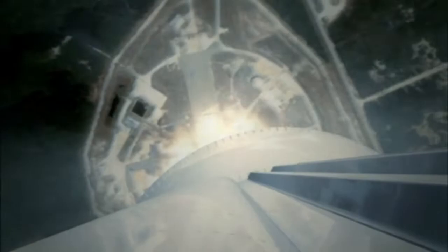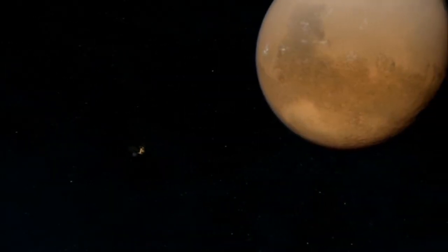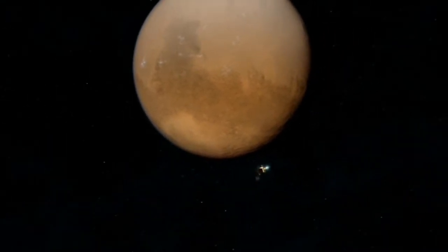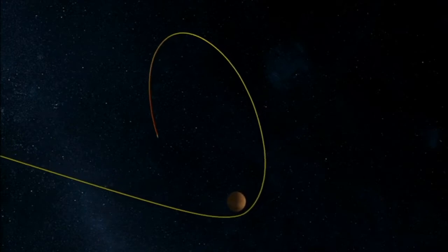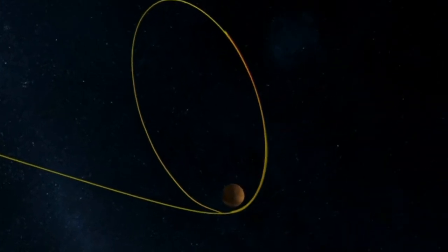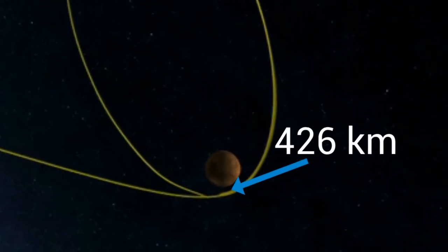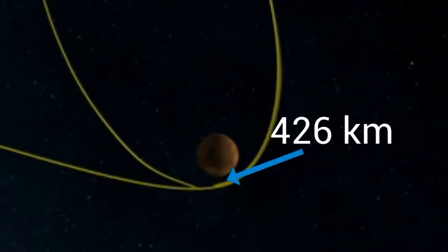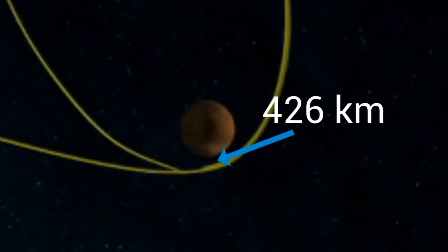The Mars Reconnaissance Orbiter launched in August 2005 and entered Mars orbit in March of 2006. The initial orbit was highly elliptical, with the orbiter at an altitude of 426 kilometers at its closest approach to Mars. Next, I'll show you how to calculate the gravitational force of the orbiter at the altitude of 426 kilometers above the surface of Mars.